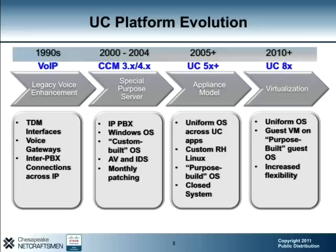Starting in 2005, Cisco launched version 5 of their IP telephony application and rebranded Call Manager as the Unified Communications Manager. This is a significant departure where we begin to see Cisco leverage a purpose-built Unified Communications Operating System, or UCOS, based on Red Hat Linux. As we move along the timeline from 2005 to 2010, Cisco begins to leverage the UCOS for other applications such as Unity Connection, Unified Presence Server, and Unified Contact Center Express. As we progress from the custom-built Windows OS platform to the purpose-built UCOS platform, we begin to increase architectural flexibility and operational efficiency. The net effect is that our UC solutions can be more responsive to changing business needs and are more stable overall.